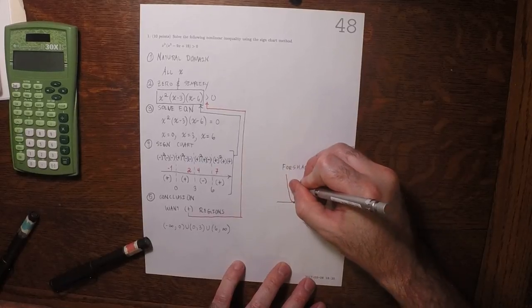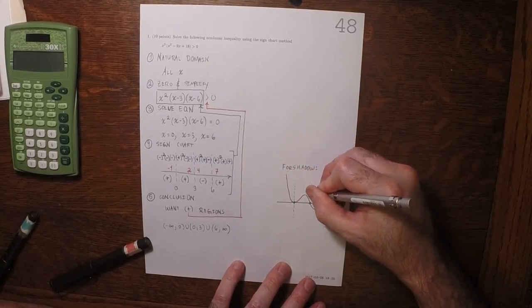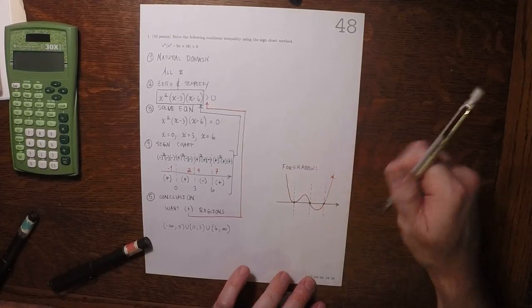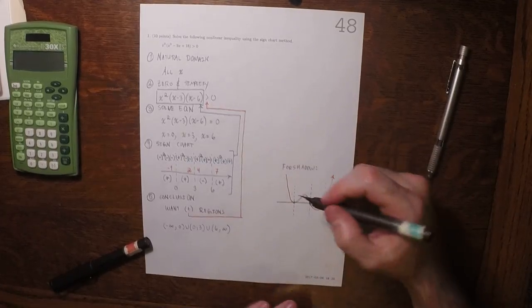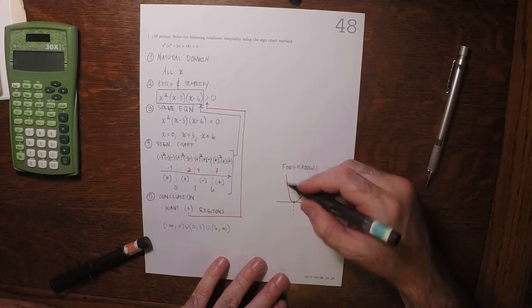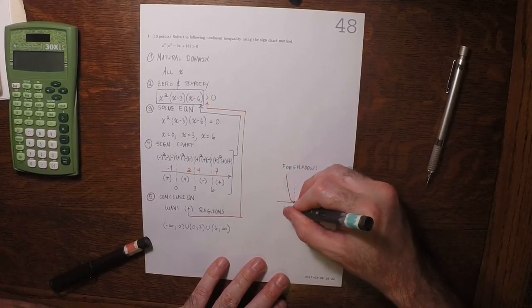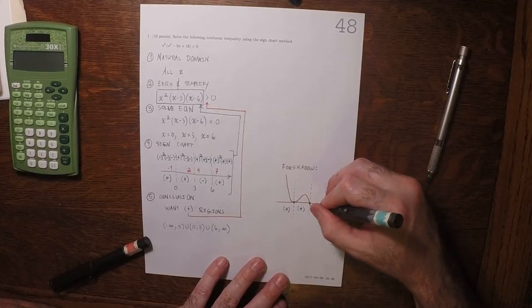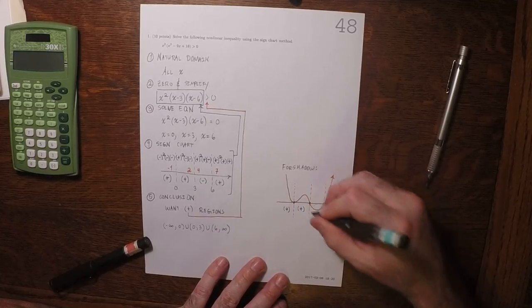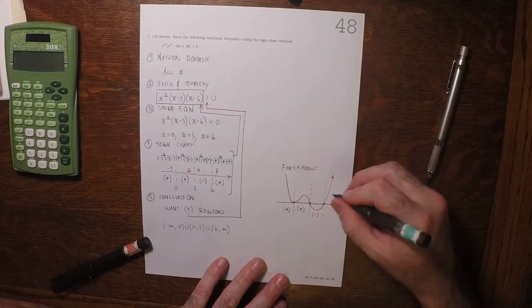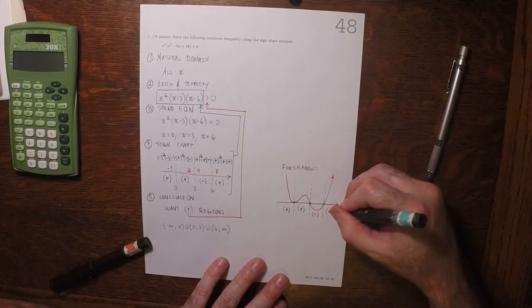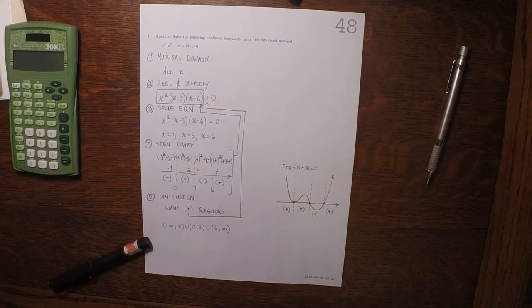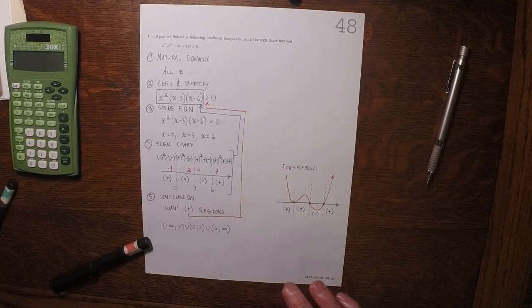So, what I want you to observe is that in each of the regions, the function is above, so that gets plus, here it's above, that gets plus, here it's below, that gets minus, and here it's above, so that gets plus. And notice, that's exactly what the sign chart says. And then, what the sign chart asks.